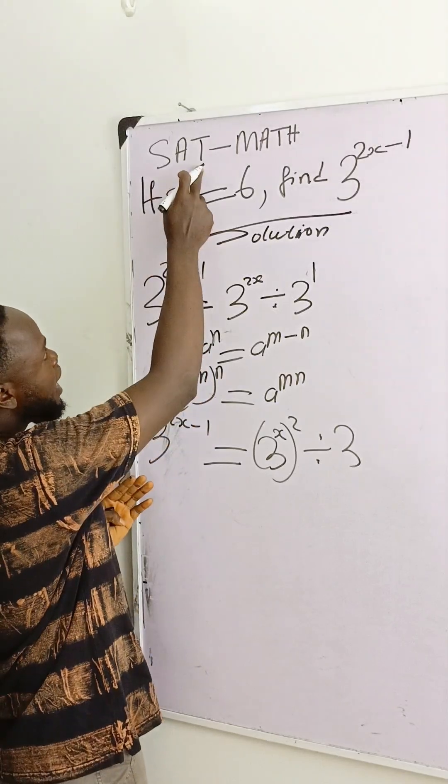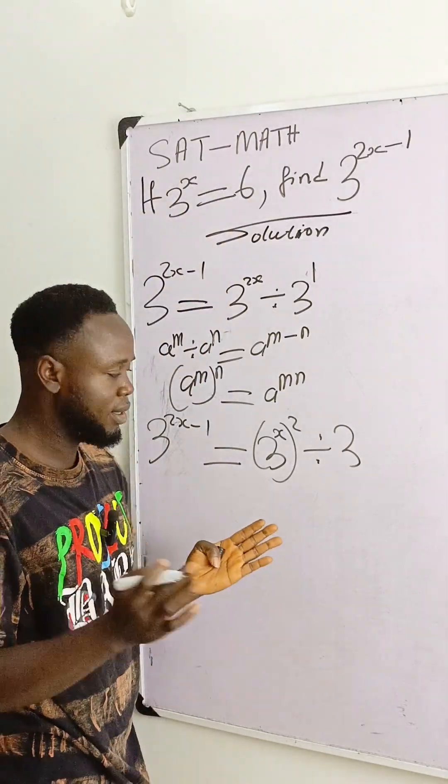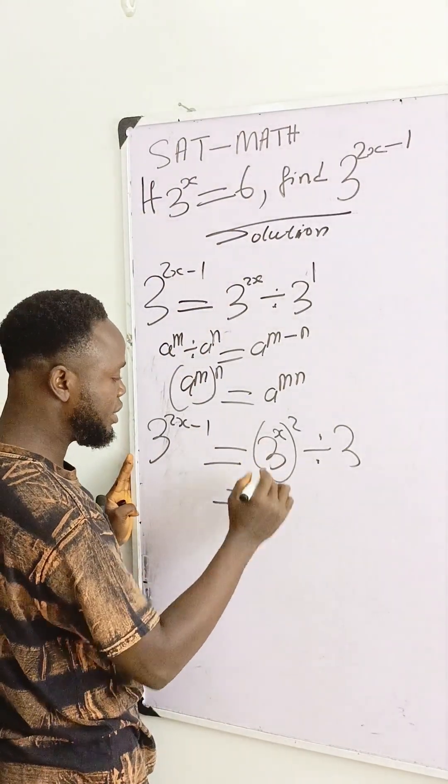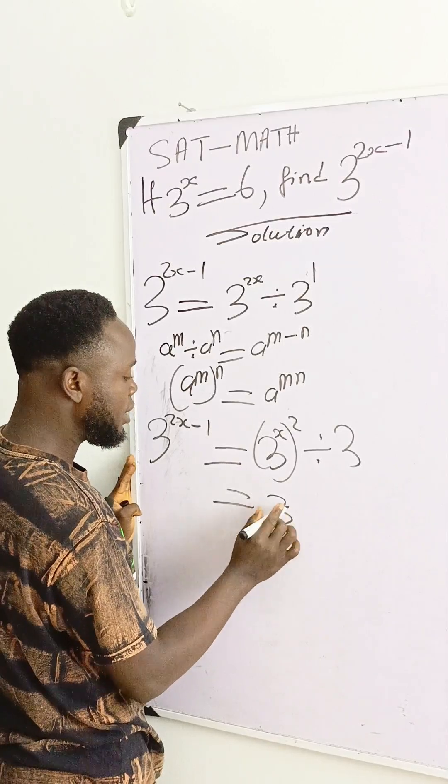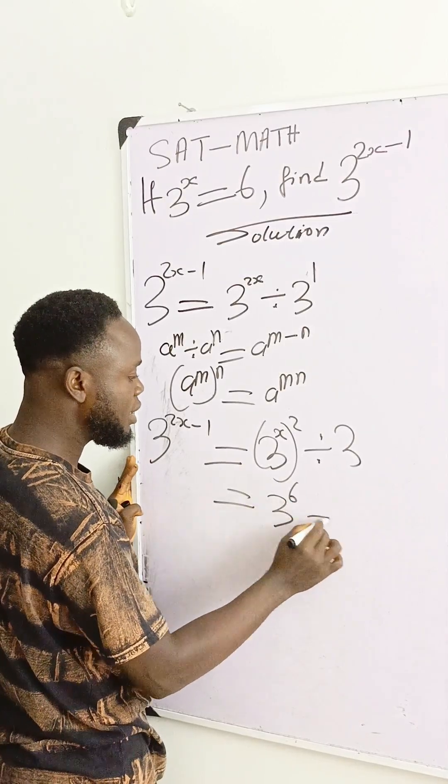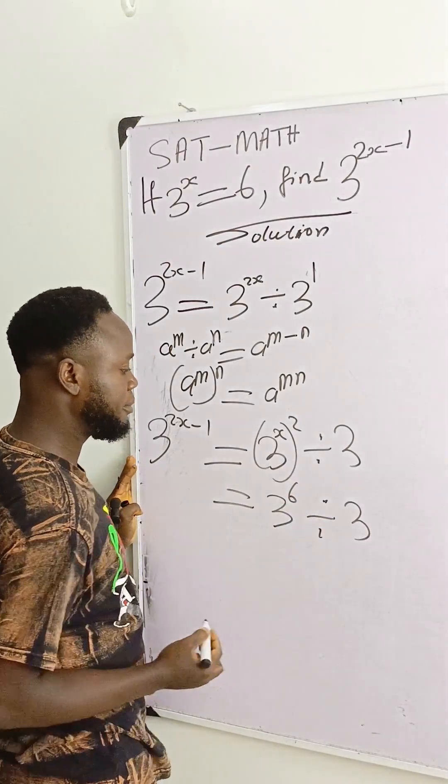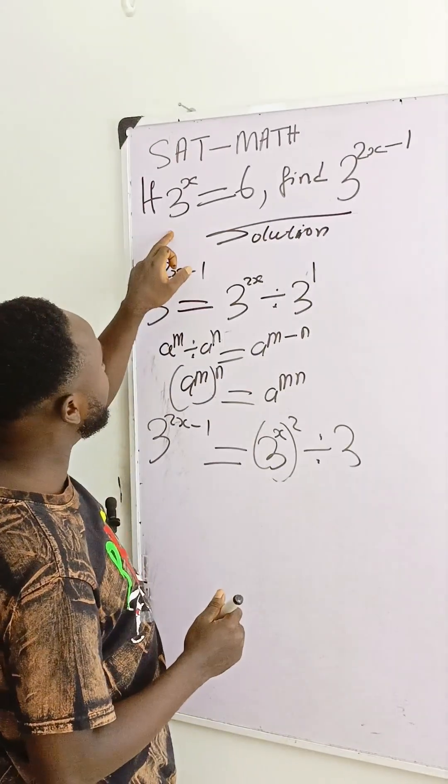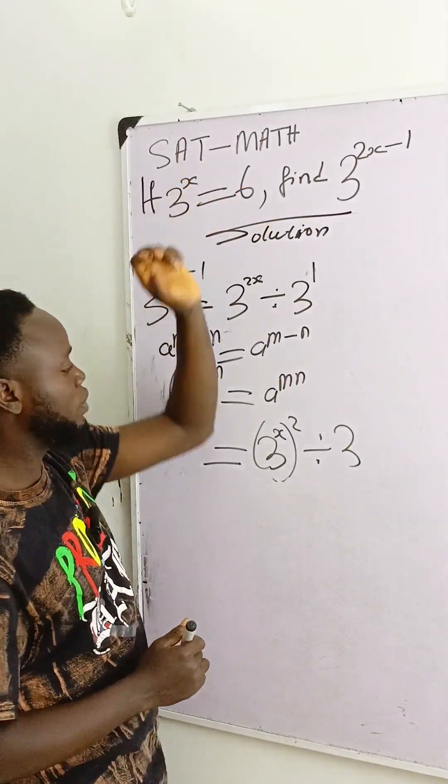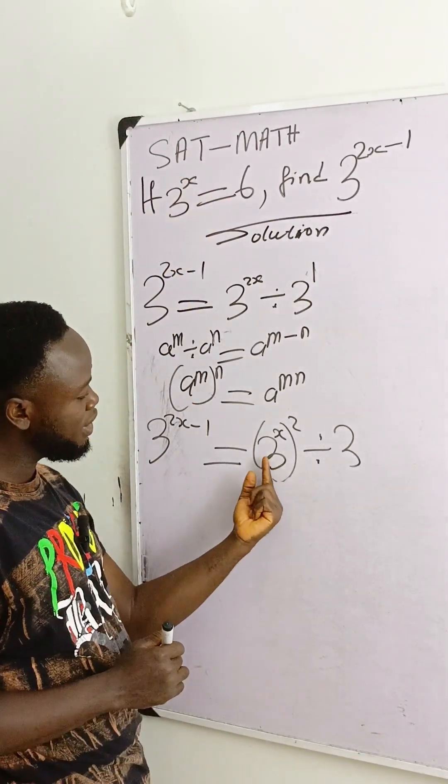Since 3 exponent x equals 6, I will write 6 here. This equals 6 to the power 2, divided by 3. We know that 3 exponent x equals 6.